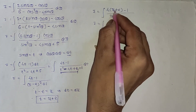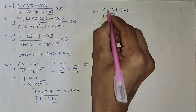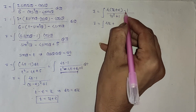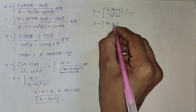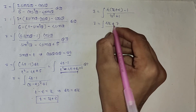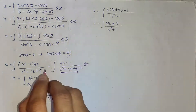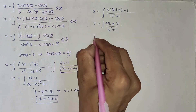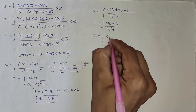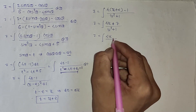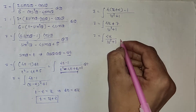So I equal to integration of 4u plus 8 minus 1, which is 4u plus 7, divided by u squared plus 1. This splits into integration of 4u divided by u squared plus 1, plus 7 times integration of du divided by u squared plus 1.